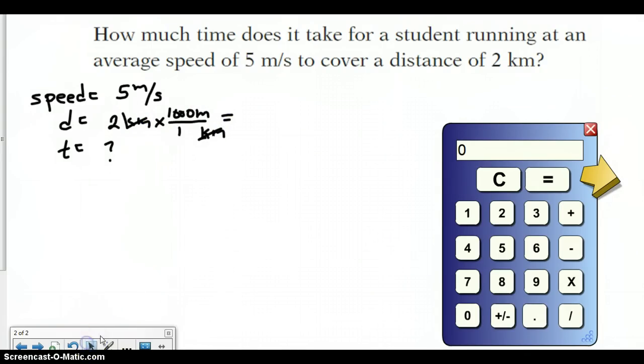Now if I go over to my calculator, well, we don't really need the calculator, do we? 2 times 1,000 is 2,000. So we're now at 2,000 meters. Now all of my units are the same, so now I can just go ahead and plug in my equation. So I have speed equals distance over time.